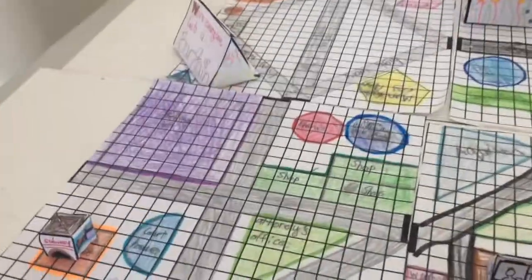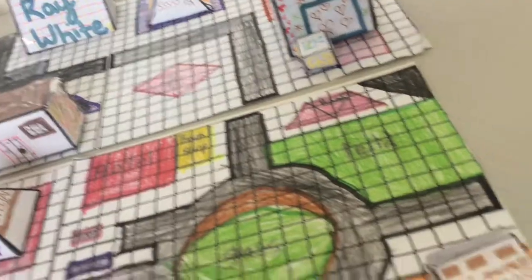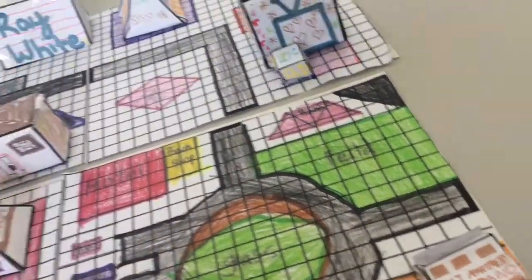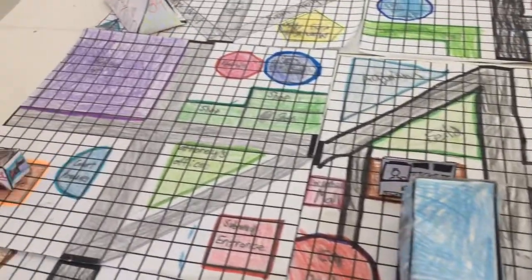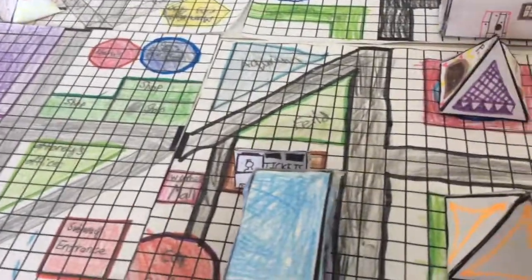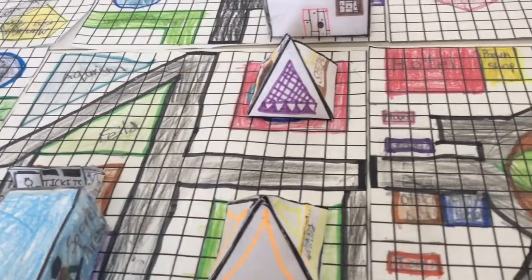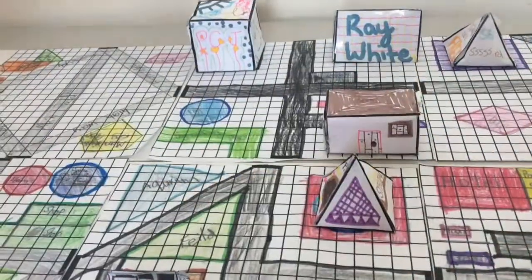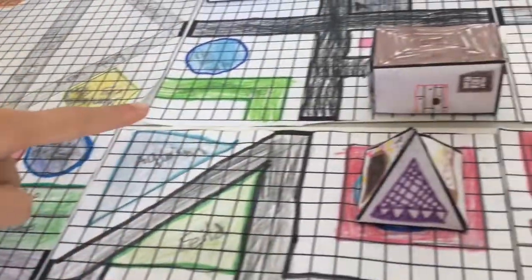People can go to the cafe to eat. I put the opera house near the middle so that people can go there and visit, and then a museum beside the opera house so that after they go to the opera house or museum, they can go to both places.